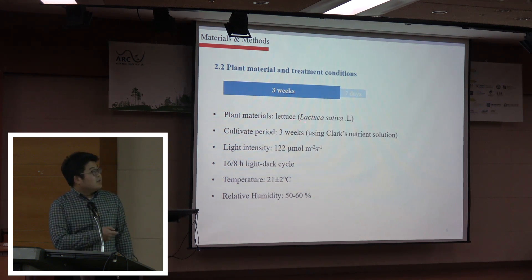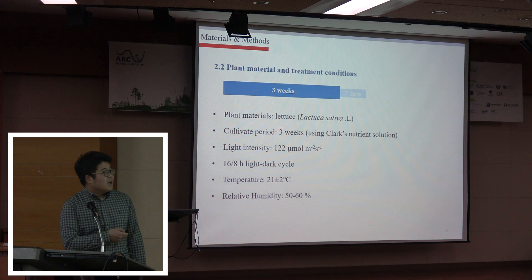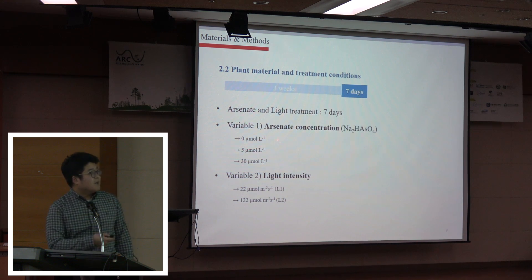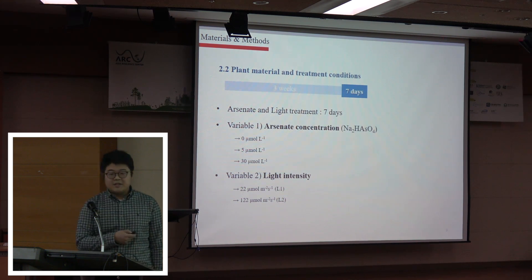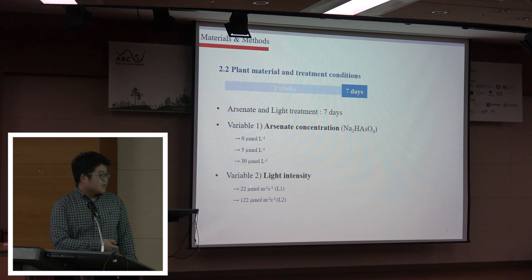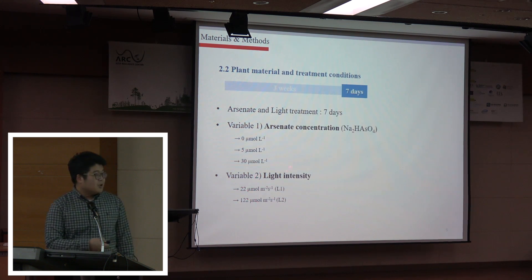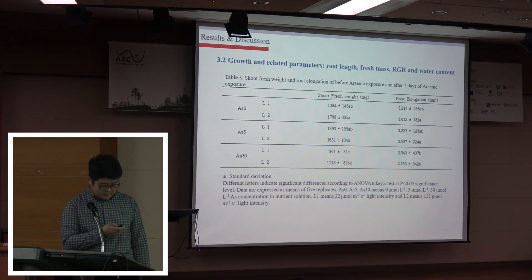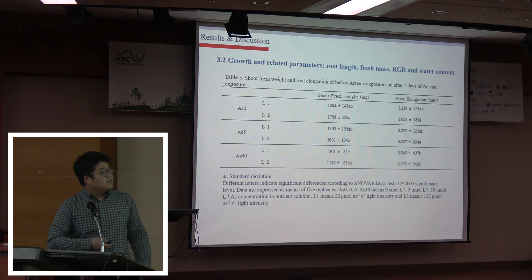For three weeks, rice was grown in half-strength nutrient solution without arsenic under a single light intensity. After that, during one week, 0, 5, and 30 micromolar arsenic was added to the nutrient solution, and 22 and 122 micromol light intensities were applied. Then, the rice was cultivated and analyzed.